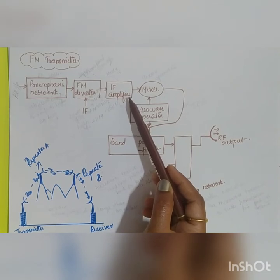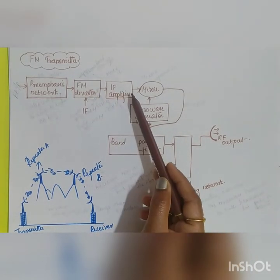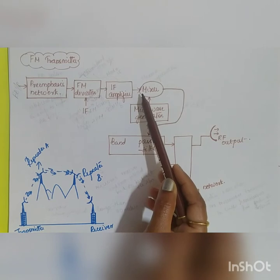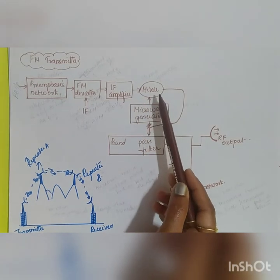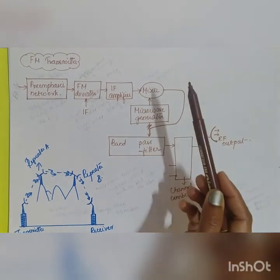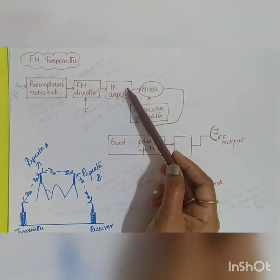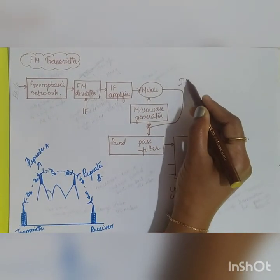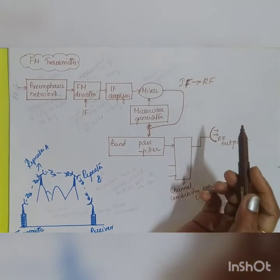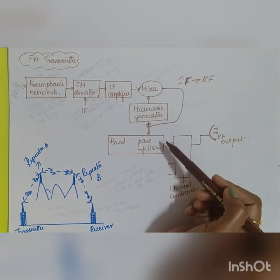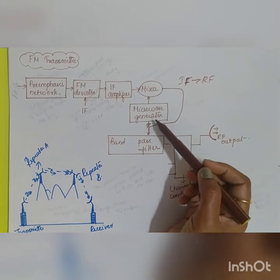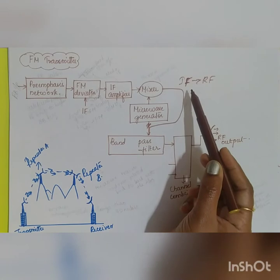The IF amplifier amplifies the signal, converting the baseband signal into the intermediate frequency range. The IF amplifier output is given to the mixer along with the microwave generator. The mixer acts as an up-converter: the IF signal is converted into an RF signal — that is, a high-frequency or microwave-frequency signal.